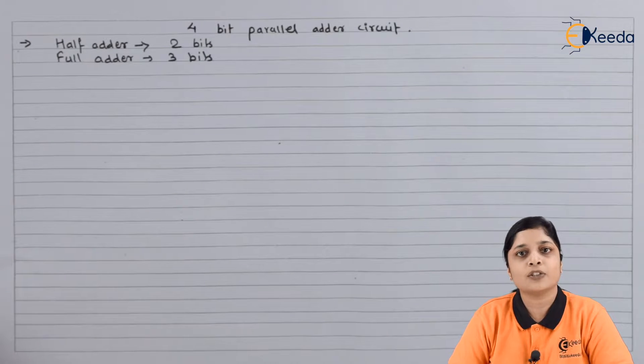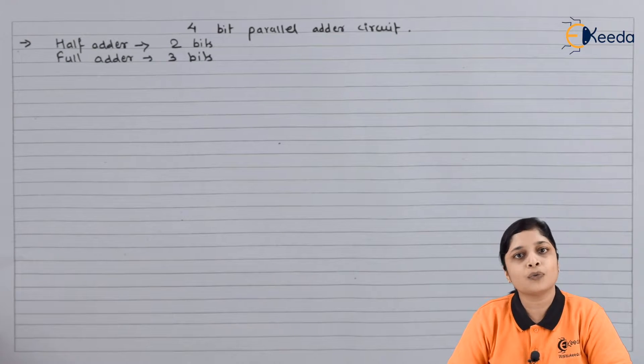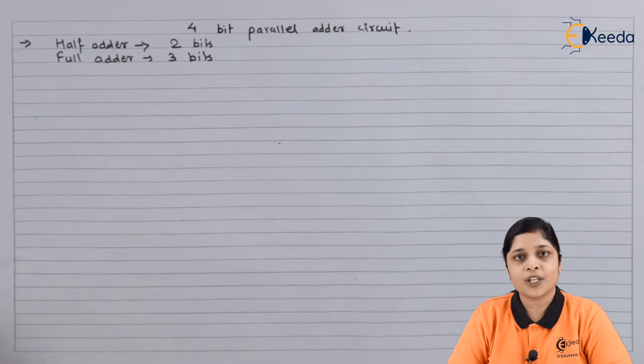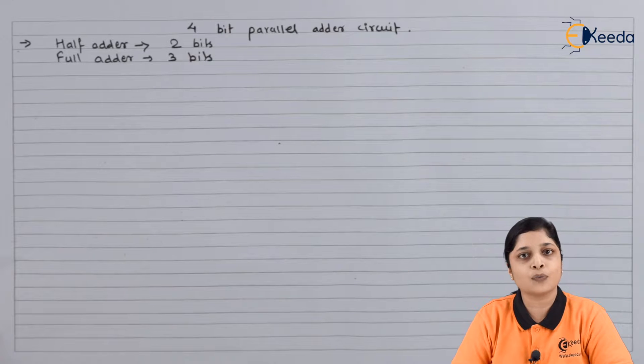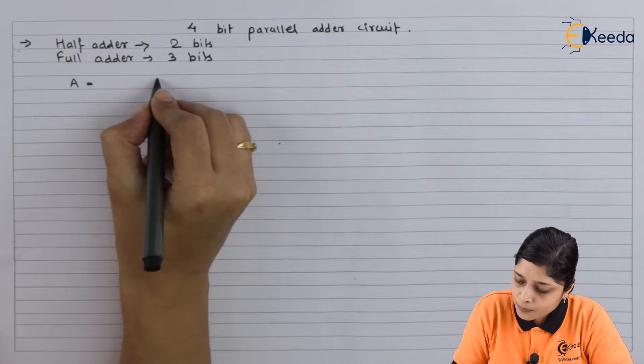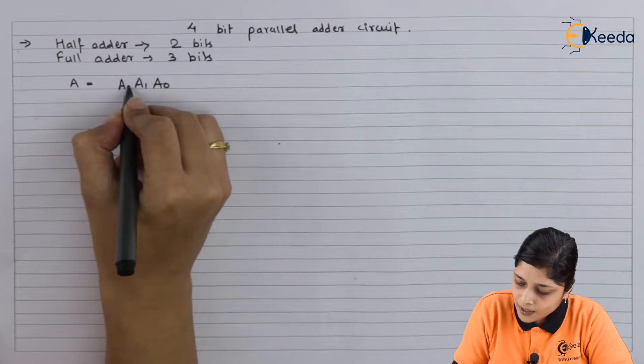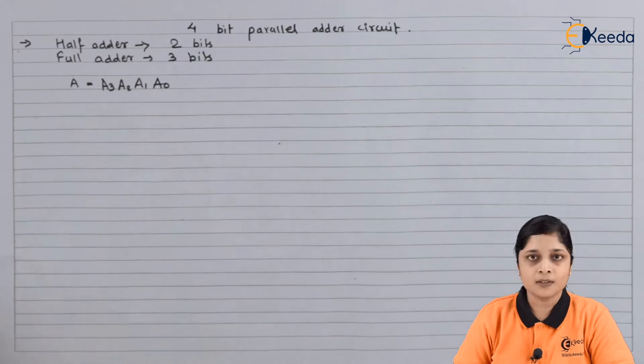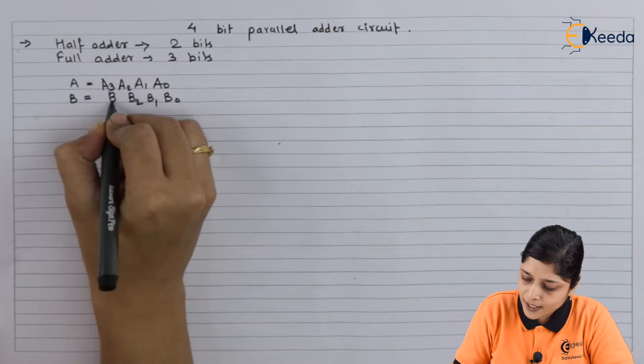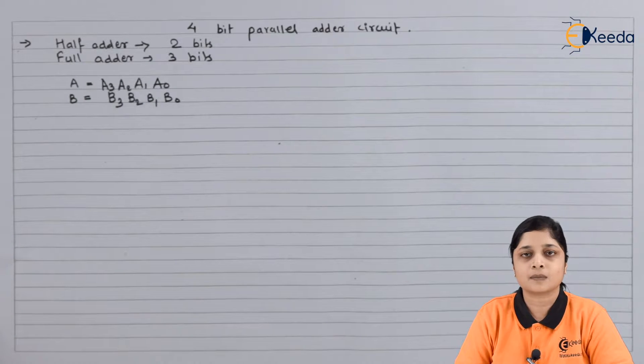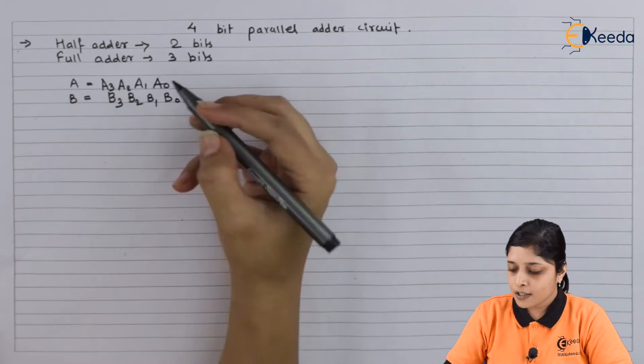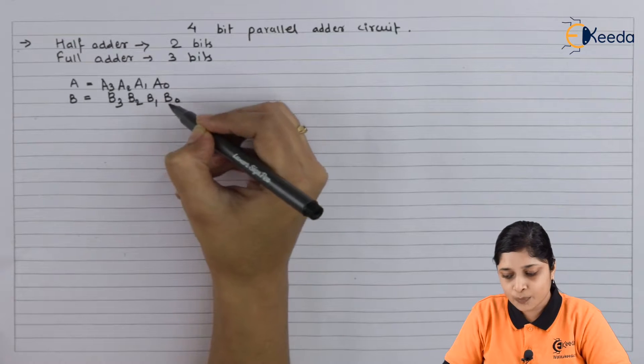You have to take four full adders for four bits. Suppose you have first word A with four bits: A0, A1, A2, and A3. Second word B: B0, B1, B2, and B3.